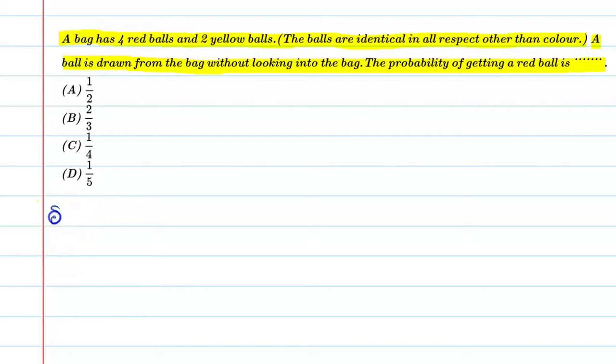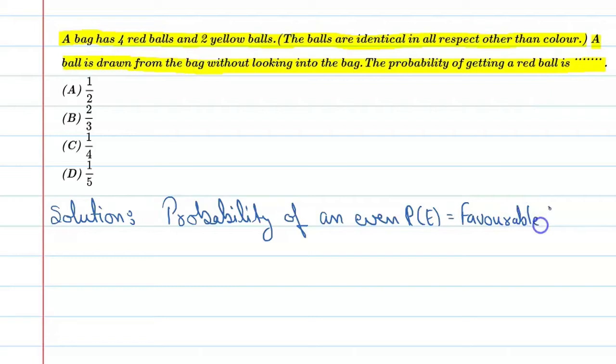So we can say, probability of an event, that is P(E) equals favorable outcomes upon total outcomes.